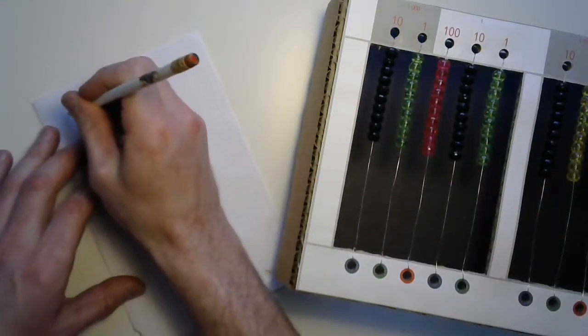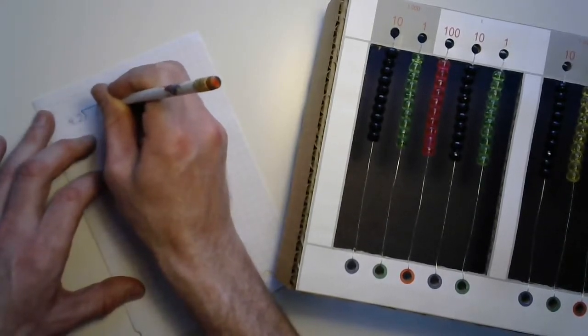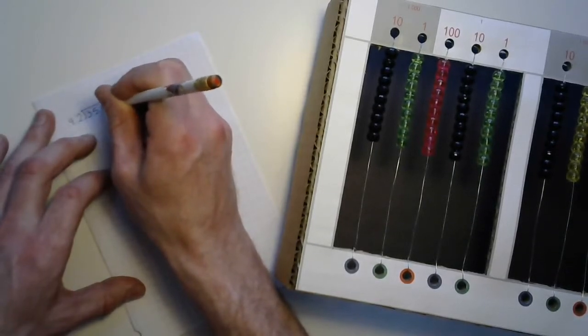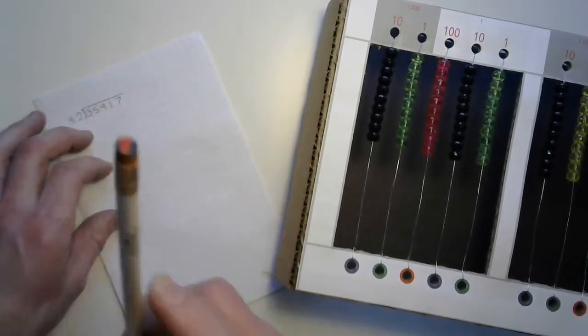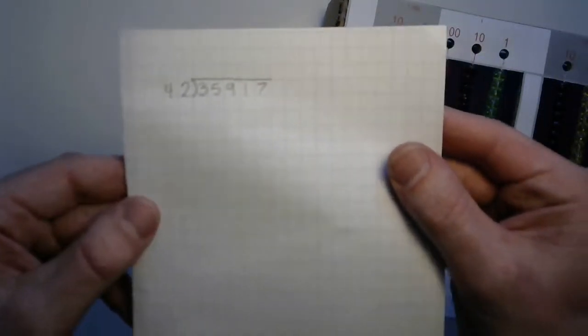Let's put in our divisor, 42, and the tableau, and the dividend, 35,917. And that's what it looks like. See that beautiful tableau?